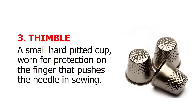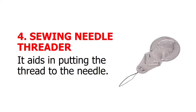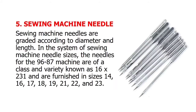Third, thimble. Fourth, sewing needle threader: it aids in putting the thread through the needle. Fifth, sewing machine needle: sewing machine needles are graded according to diameter and length. The needles for the 96-87 machine are of a class and variety known as 16x231, and are furnished in sizes 14, 16, 17, 18, 19, 21, 22, and 23.